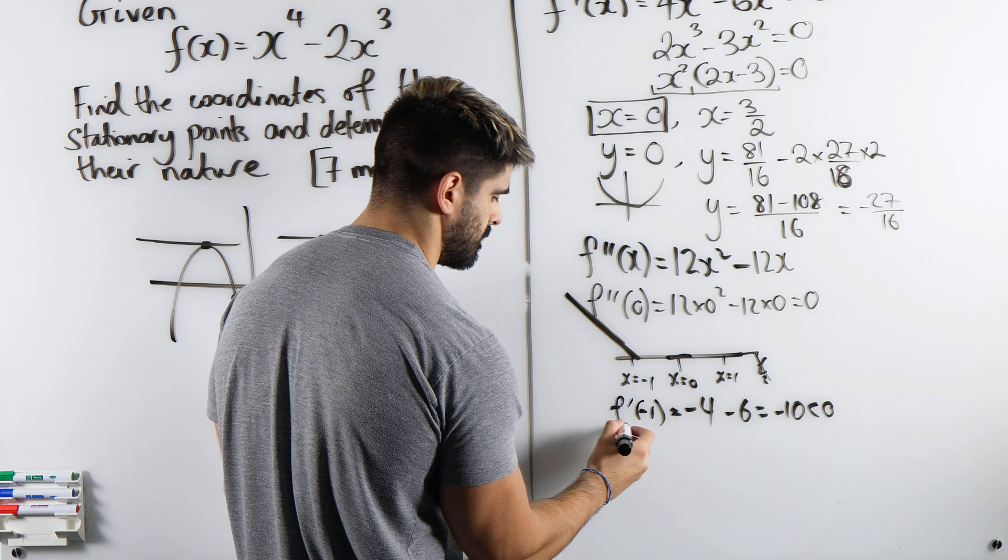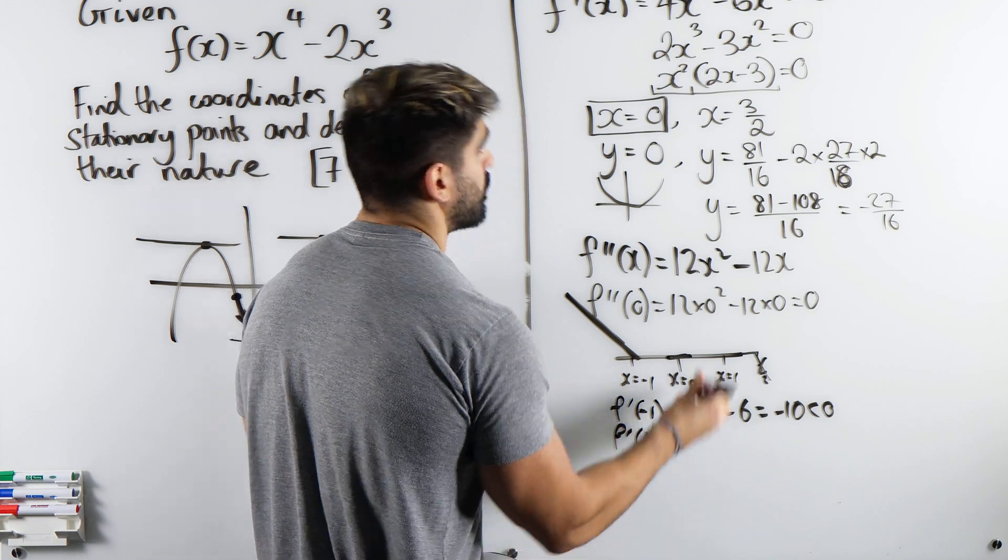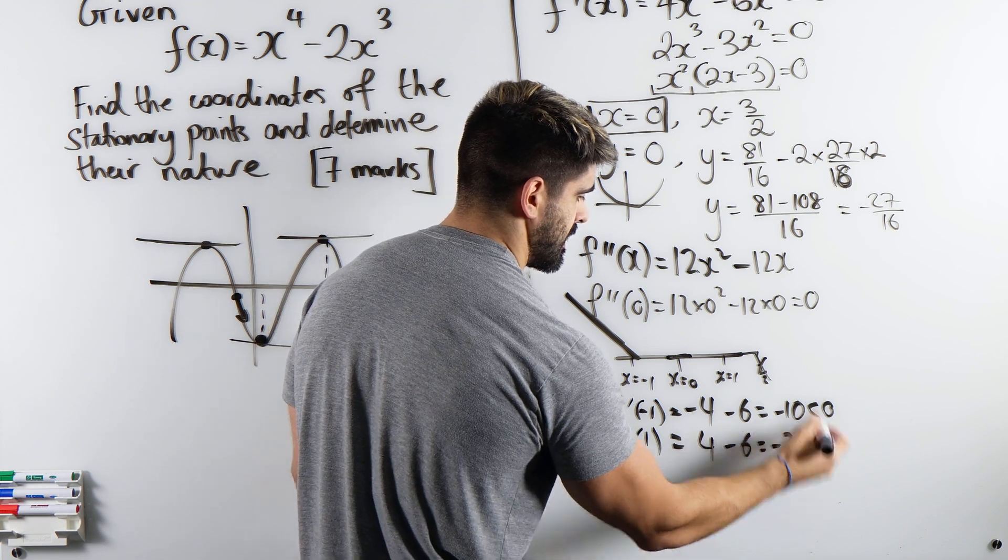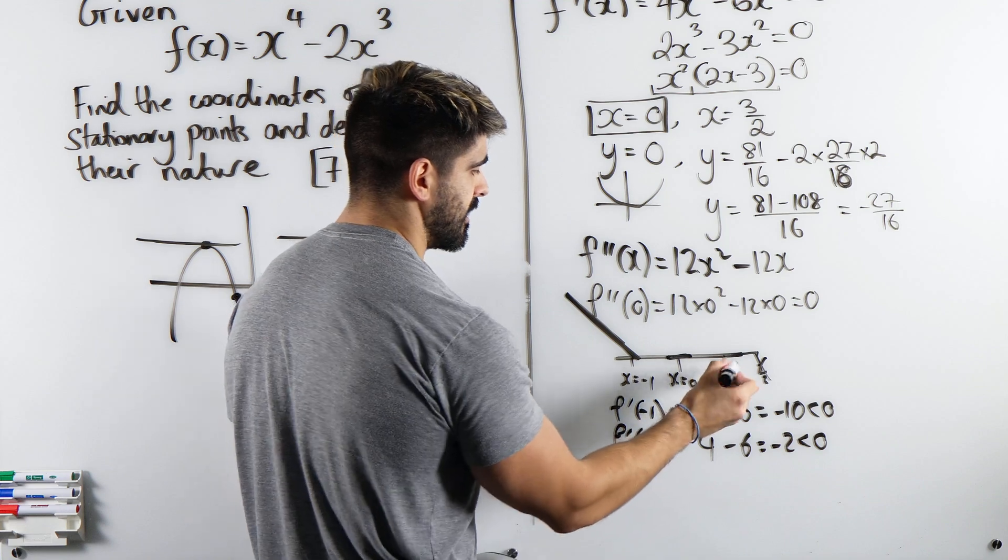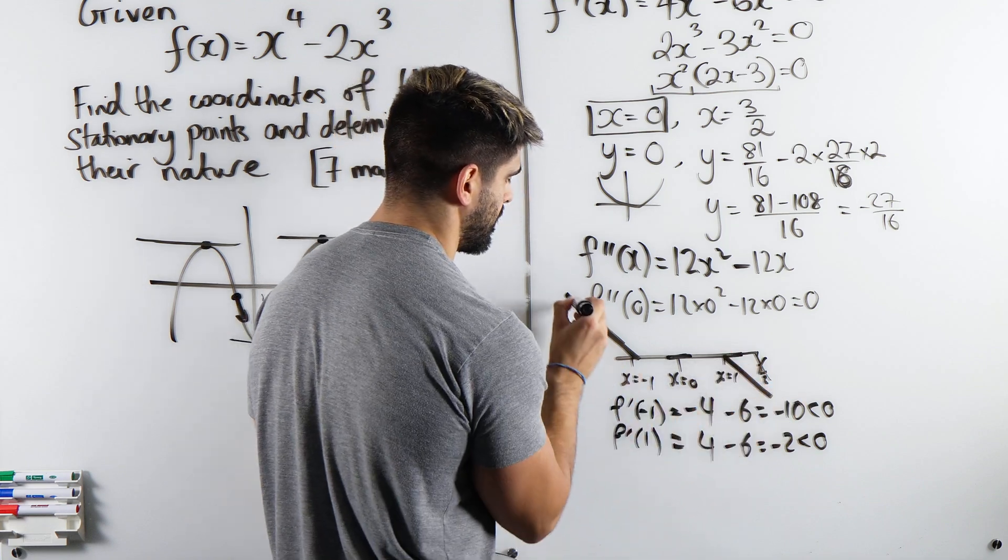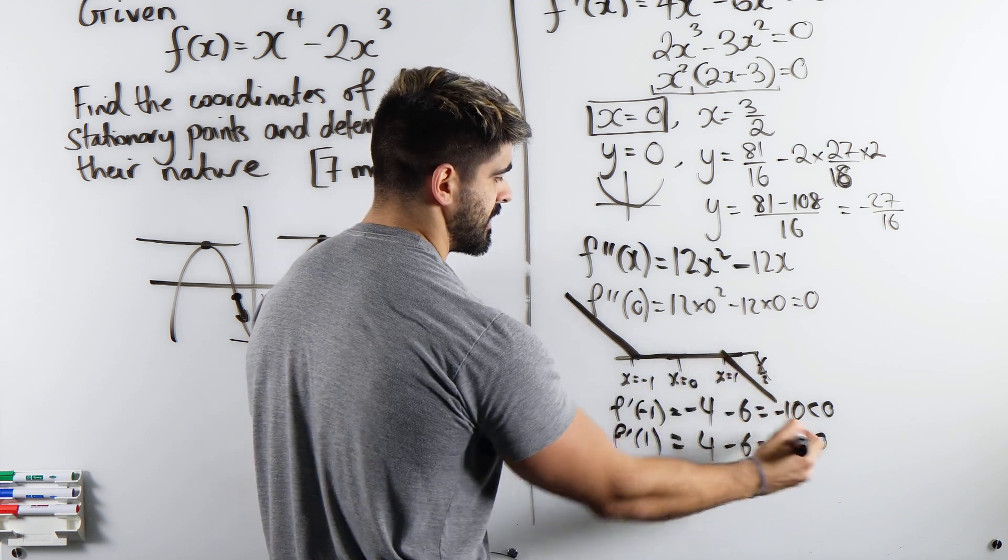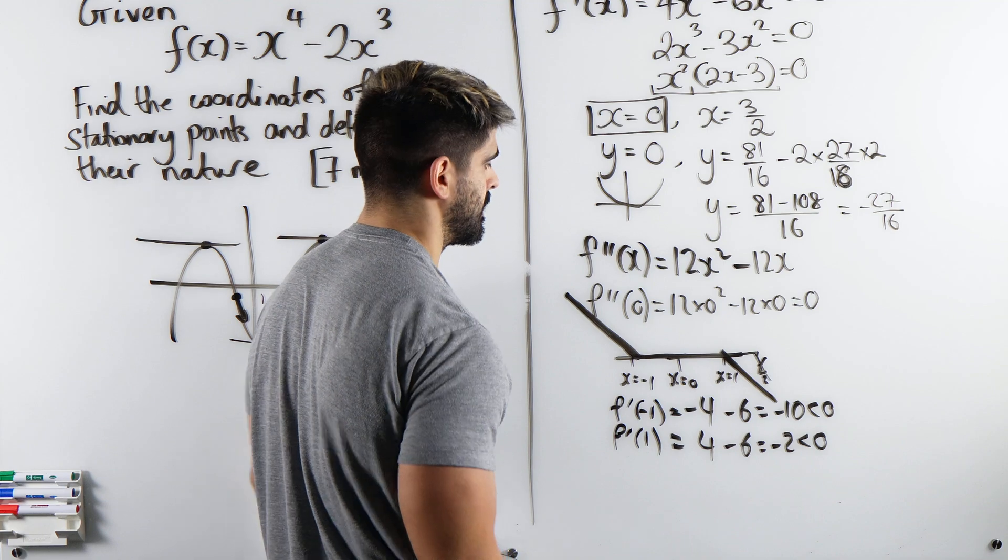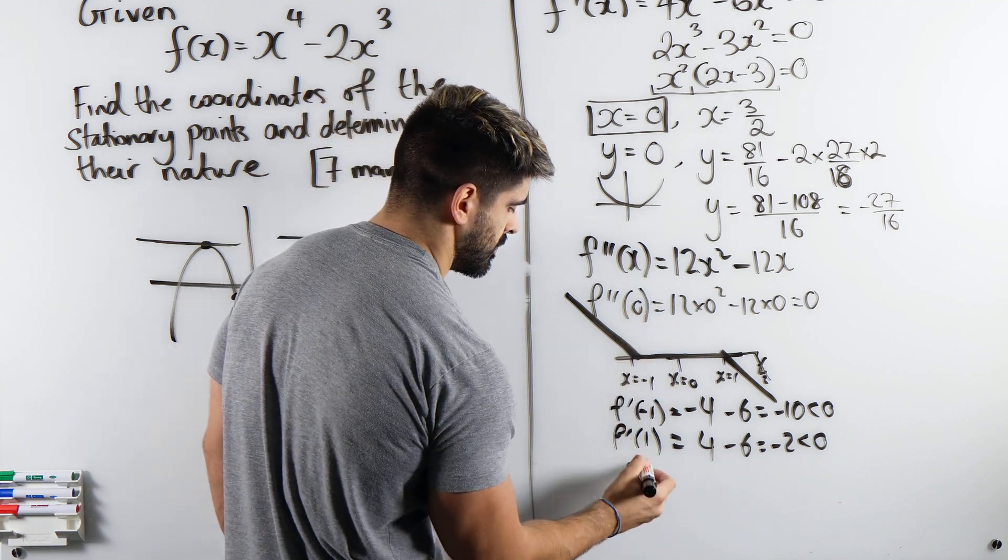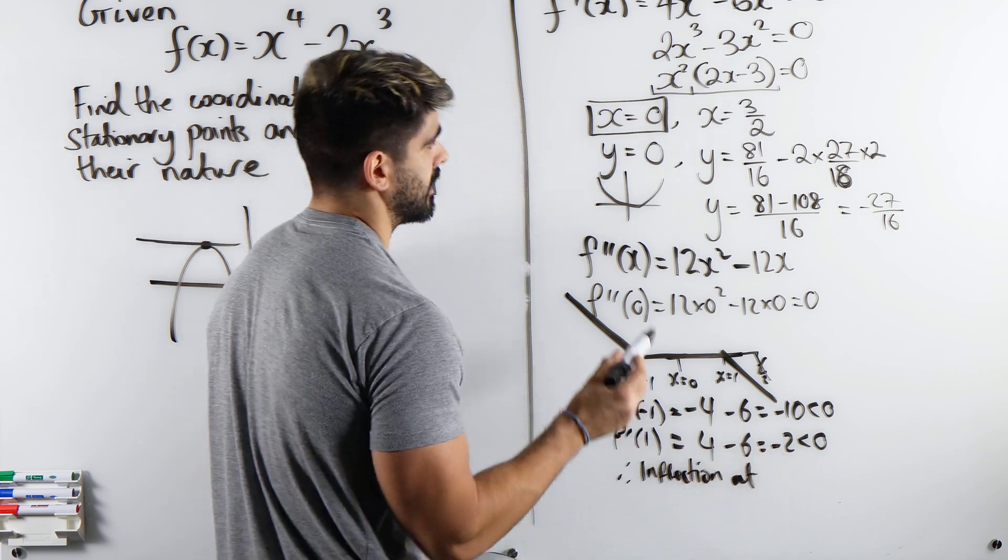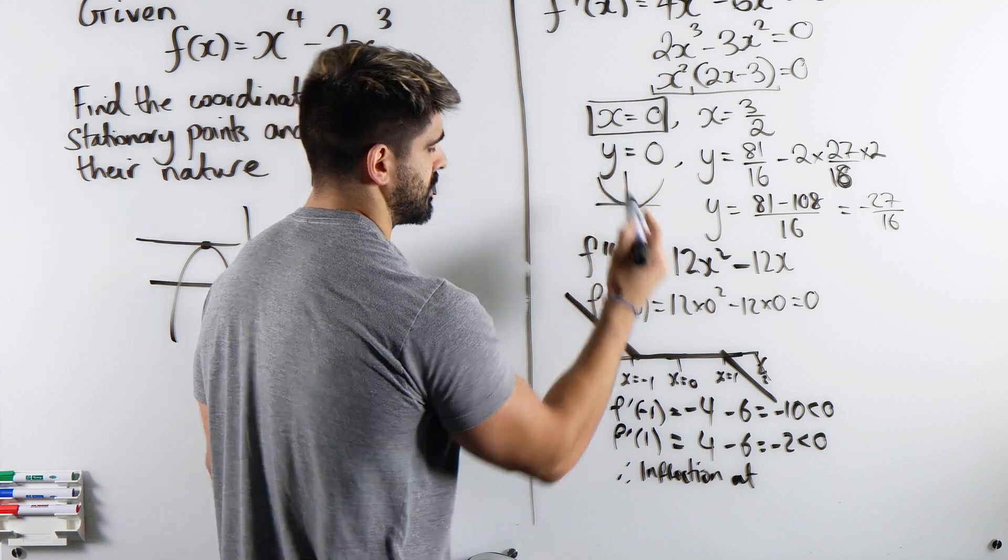Now let's test out 1. When we sub in 1, you just get 4 minus 6, which is minus 2. It's still negative. So over here, it's negative. Aha, look. They're the same sign. It's going to be an inflection point. So therefore, it's an inflection at, what was the coordinate? 0, 0.